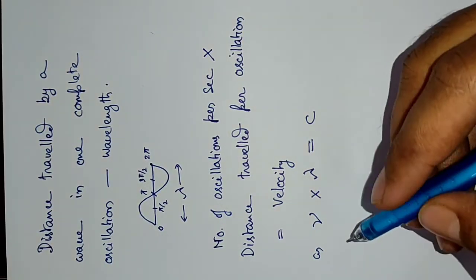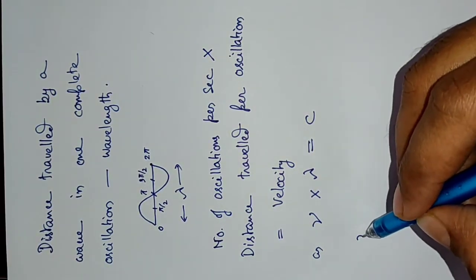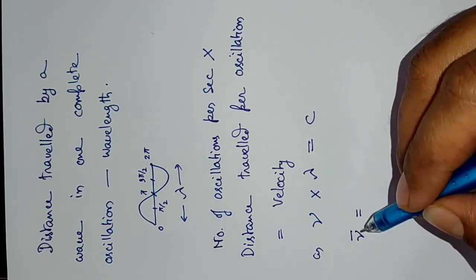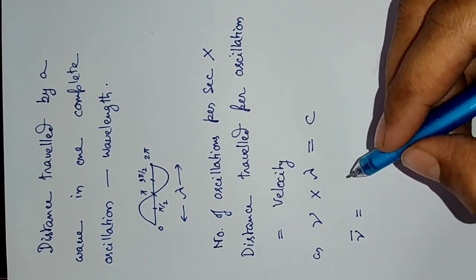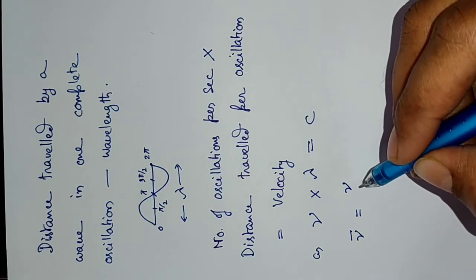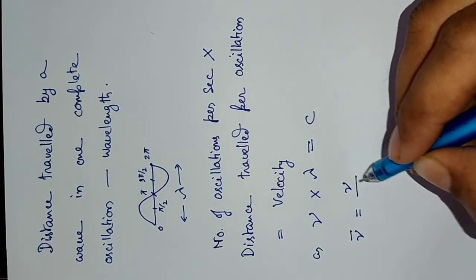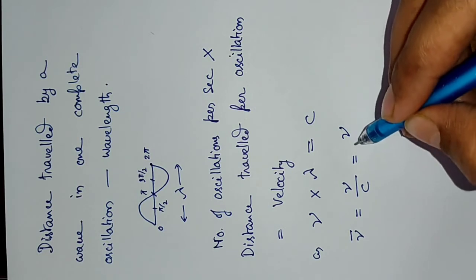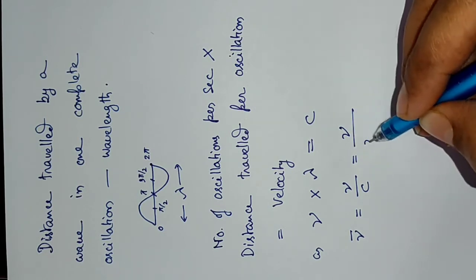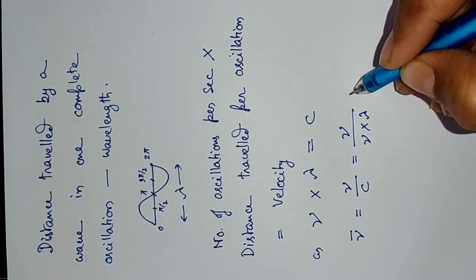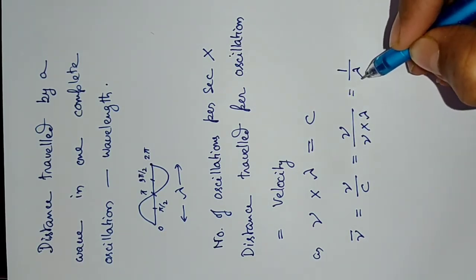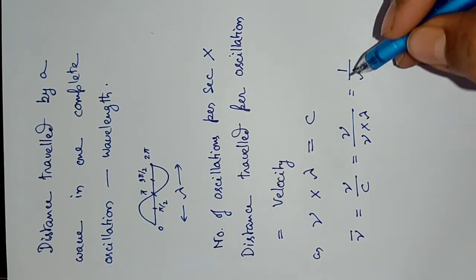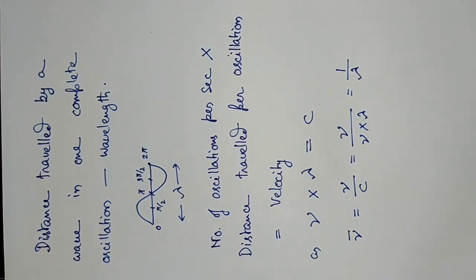Now, what will be the wave number in terms of wavelength? The definition of wave number is ν/c, that is the number of waves per centimeter. Substituting the value, it becomes ν/(ν·λ), which is the inverse of wavelength. We get centimeter inverse, so our expression is correct.